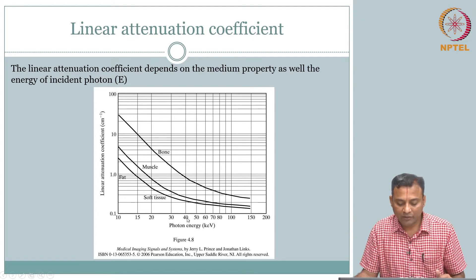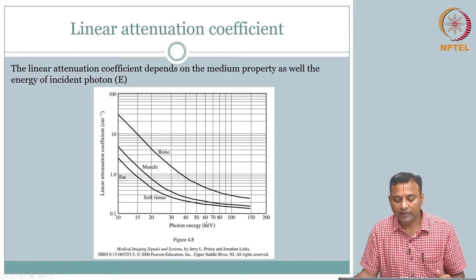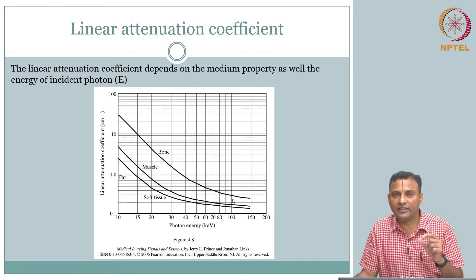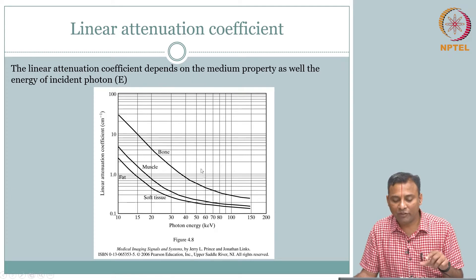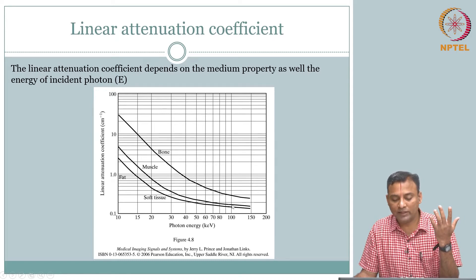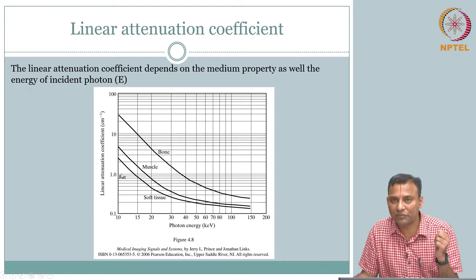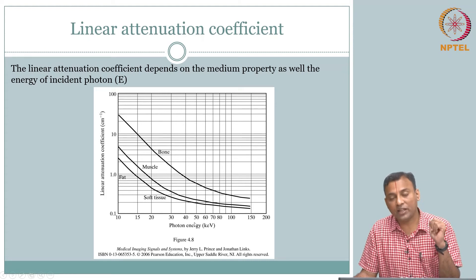If we send x-rays at higher energies, the difference between different materials — bone, muscle, or fat — reduces. When I say 'difference,' the concept that should come to mind is contrast. The inherent contrast between bone, muscle, and fat in terms of their linear attenuation coefficient reduces as you start to use higher energy.